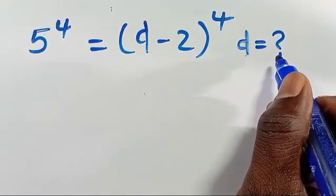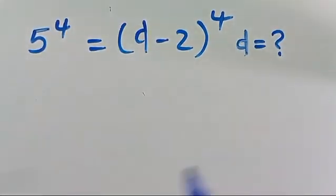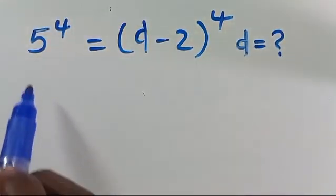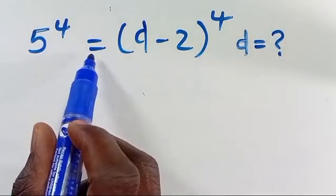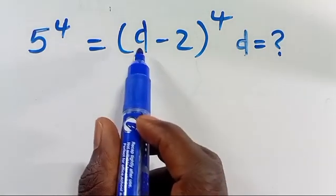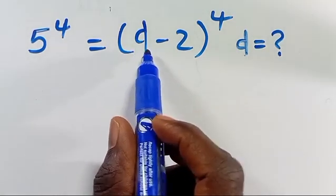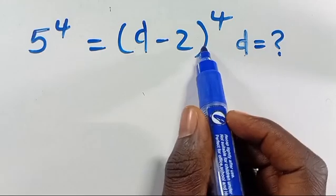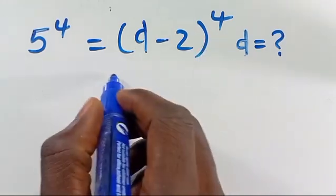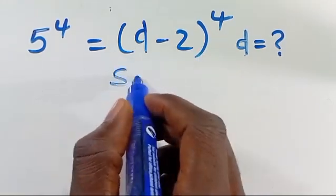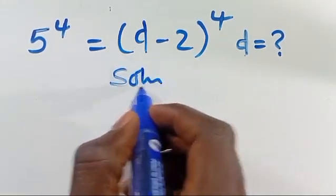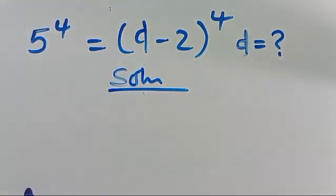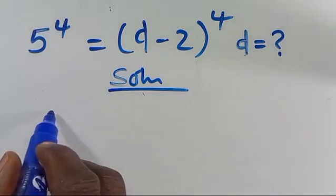Hello. What's the value of D given that you have 5 to the power of 4 equals open parenthesis D minus 2 close parenthesis to the power of 4? Let's have its resolution.